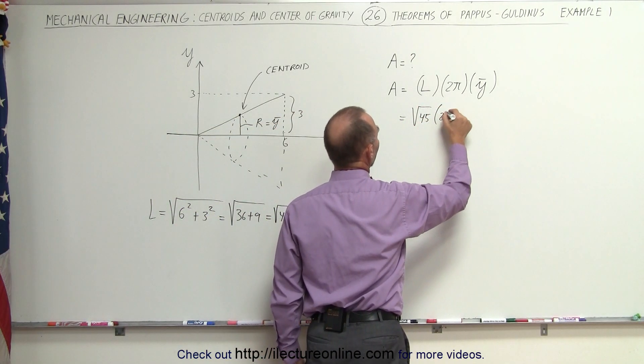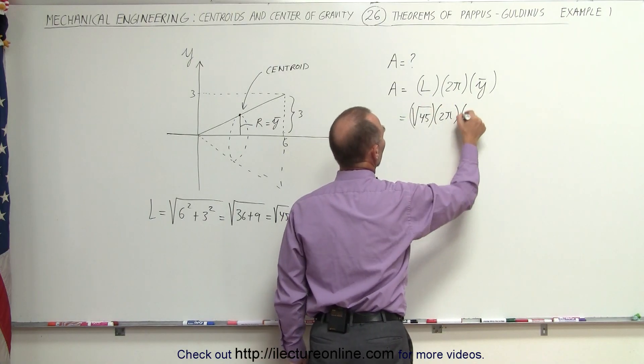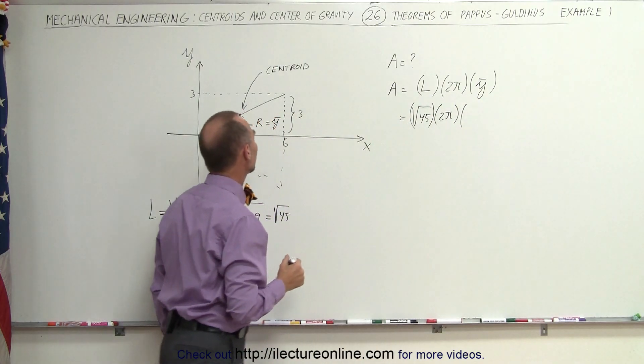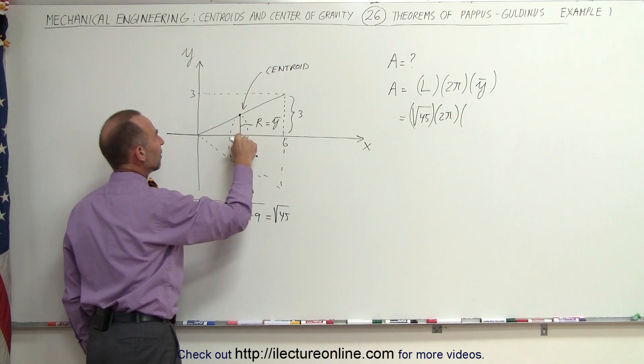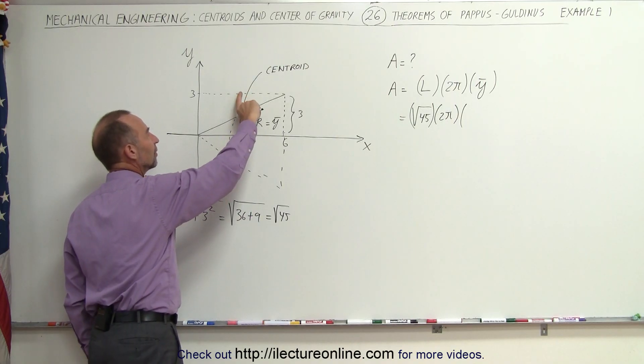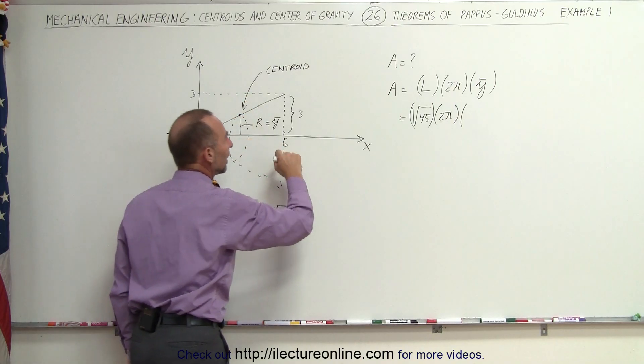We multiply that times 2π, and we multiply that times the y-coordinate of the centroid. Now the centroid is halfway from this to the top here. If this is 3, then this must be equal to 1.5.